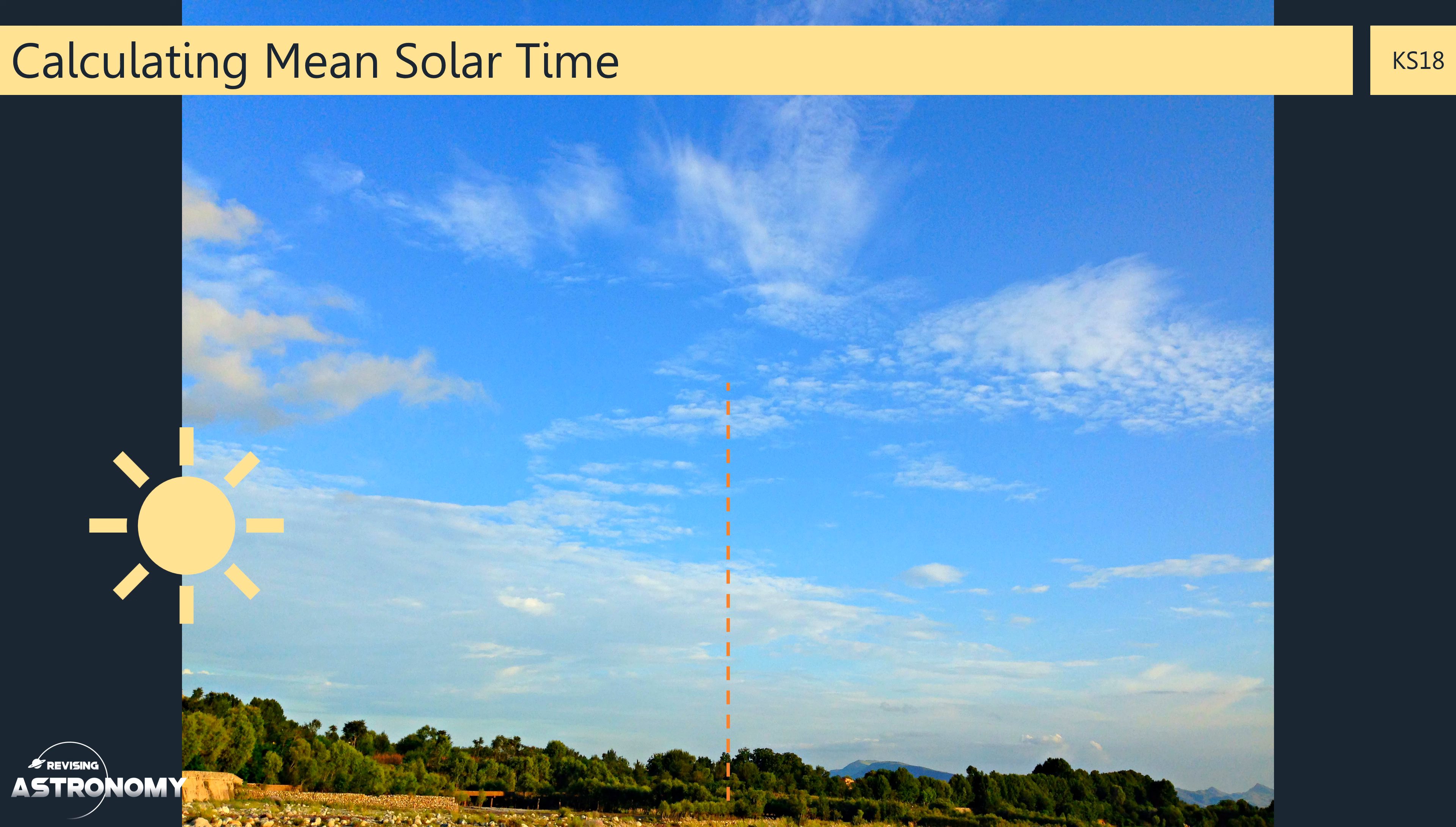Let's think about this. When is it midday? Surely it's simple, when the Sun is at the highest point in the sky. Well, this would be true if the Sun appeared to move at the same speed through the sky every day, but it doesn't.